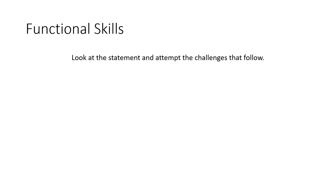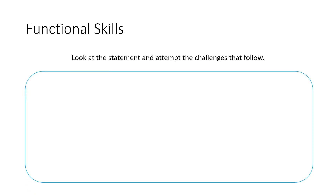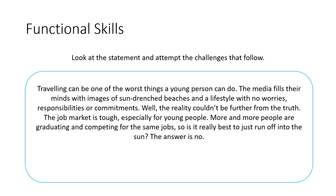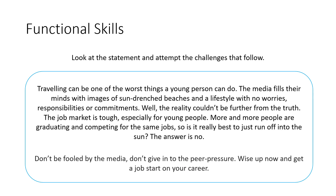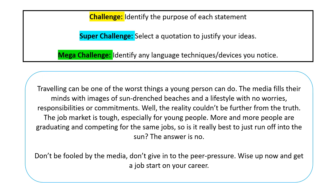Now we're moving on to the next statement, looking at the same challenges. We're going to be talking about the same topic, but is the actual purpose of the writing the same or different? It says: 'Travelling can be one of the worst things a young person can do. The media fills their minds with images of sun-drenched beaches and a lifestyle with no worries, responsibilities or commitments, while the reality couldn't be further from the truth. The job market is tough, especially for young people. More and more people are graduating and competing for the same jobs — so is it really best to run off into the sun? The answer is no. Don't be fooled by the media. Don't just give in to peer pressure. Wise up now and get a job to start your new career.'